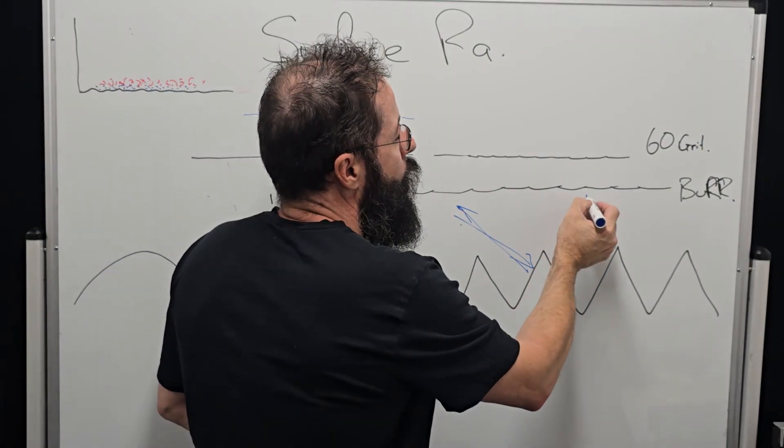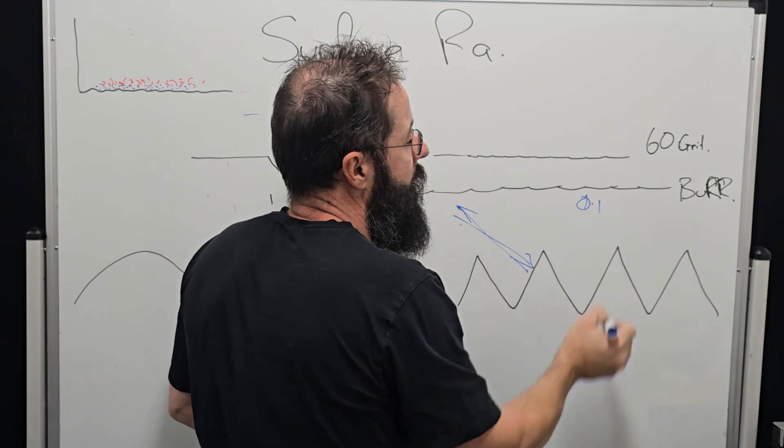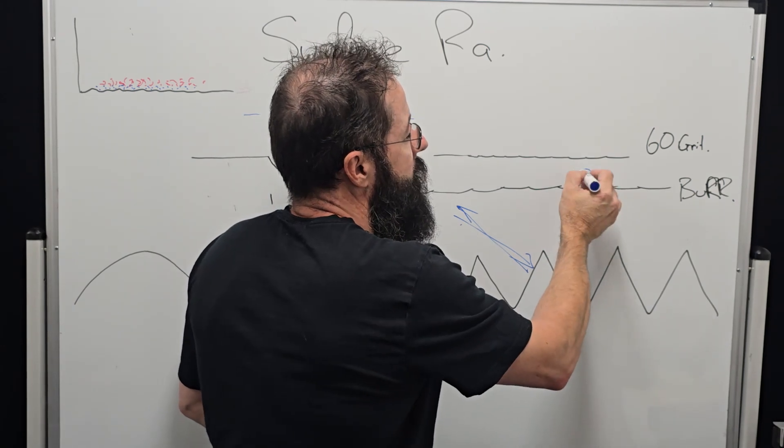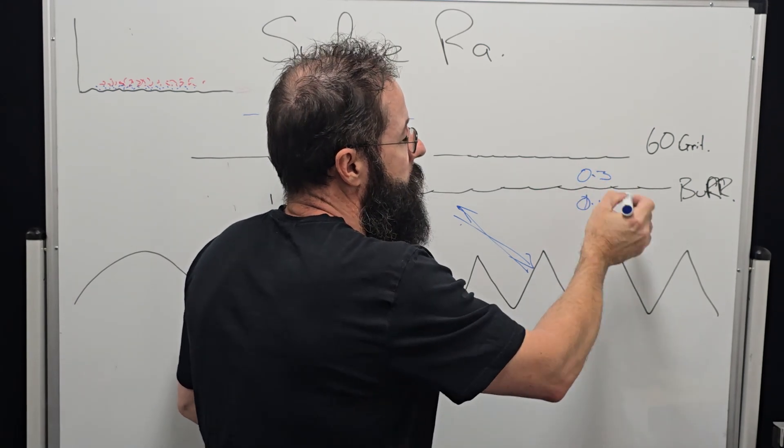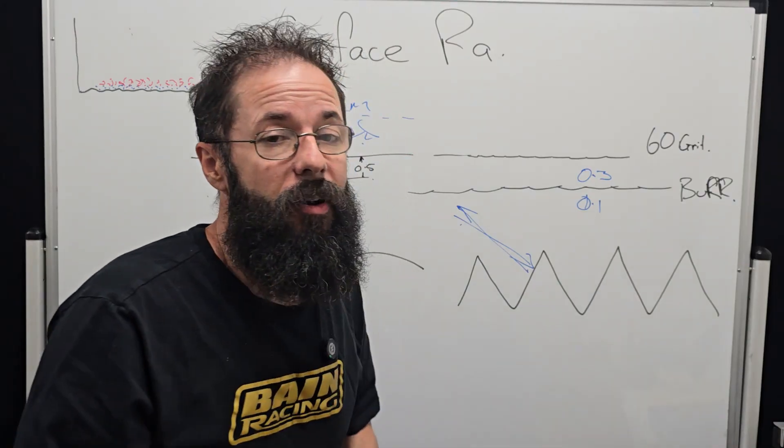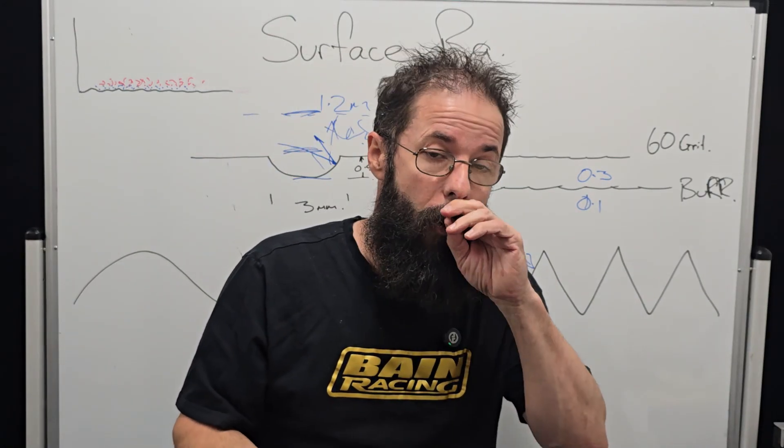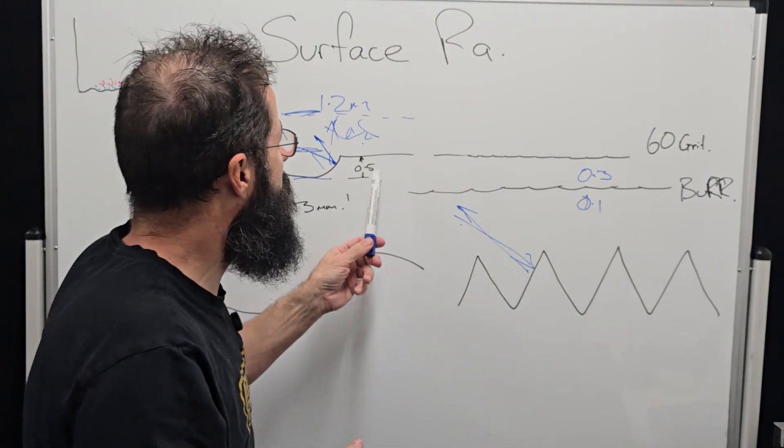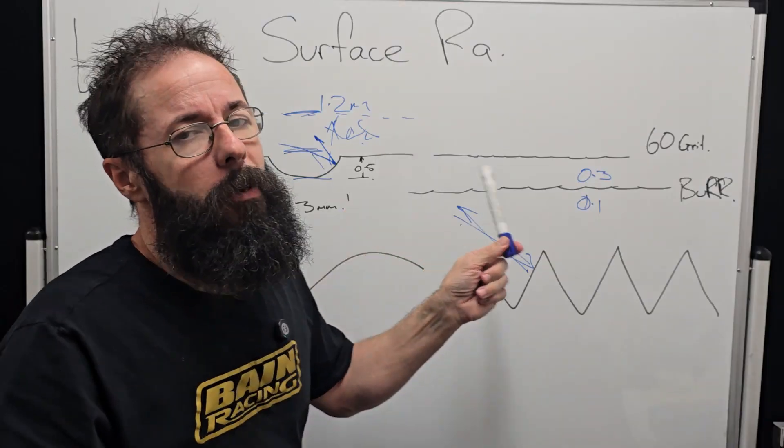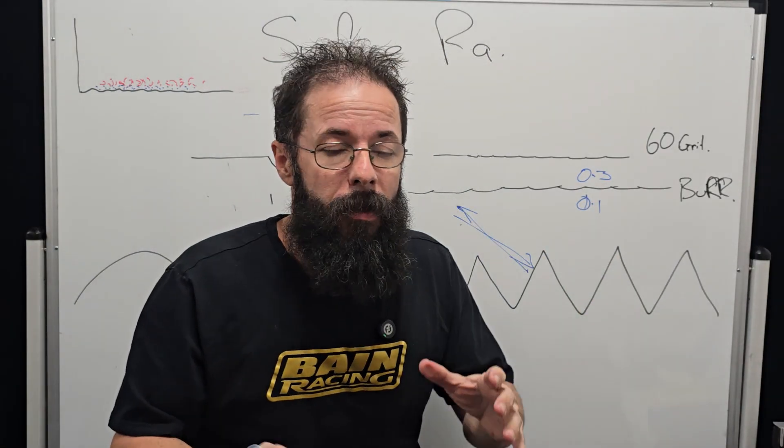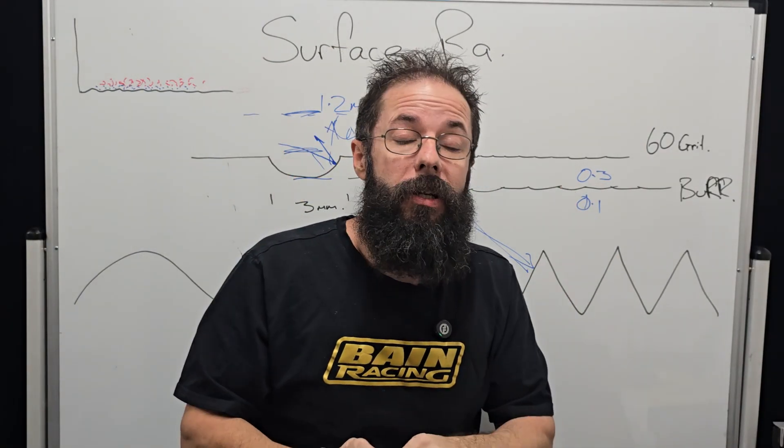We need to control this because the other problem I see is a lot of people will try and measure a boundary layer on a flow bench. A flow bench isn't a dynamic environment, so you can't probe a flow bench and say, 'Oh look, there's not a lot of air speed along that floor or roof or whatever.'